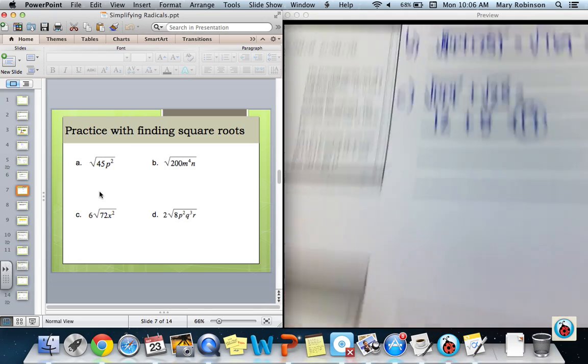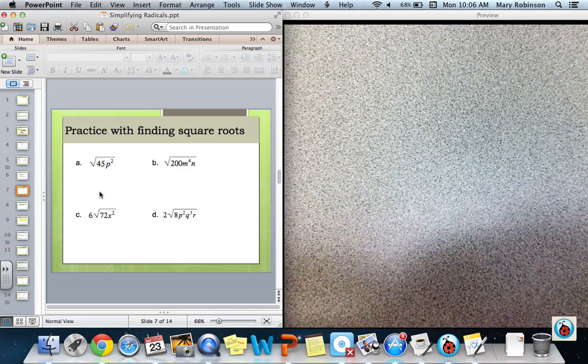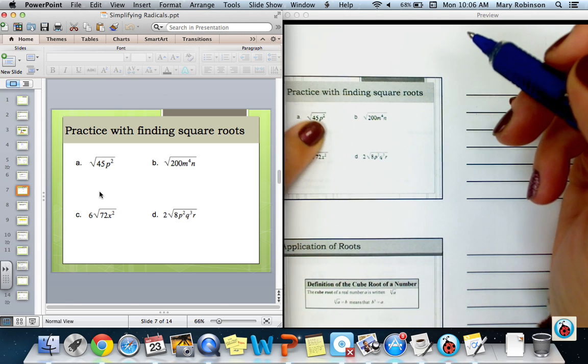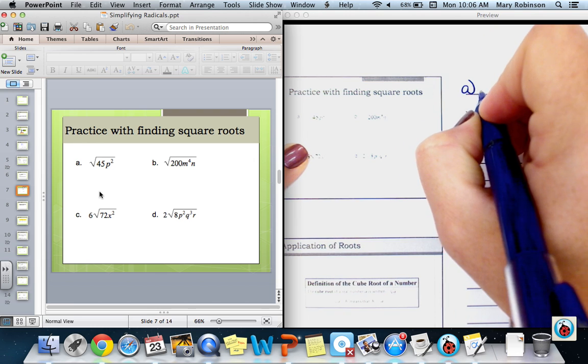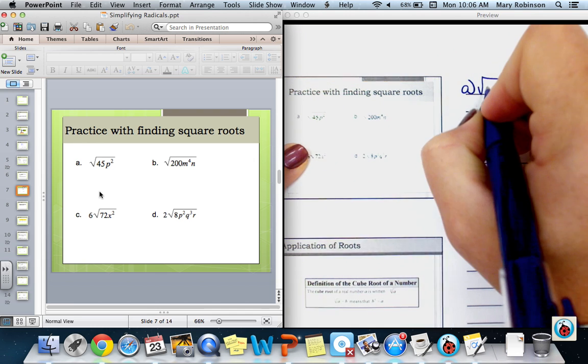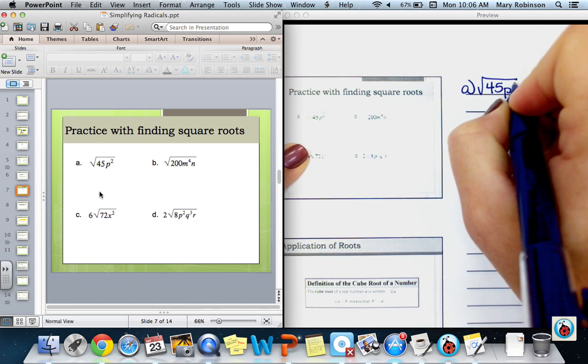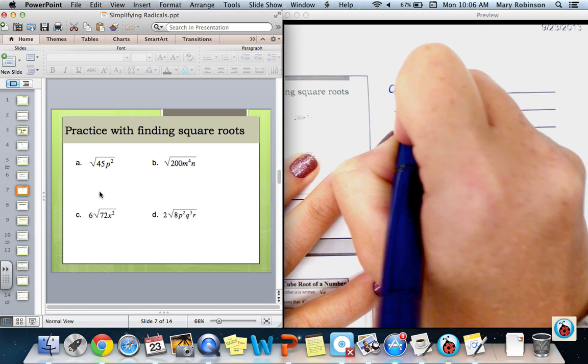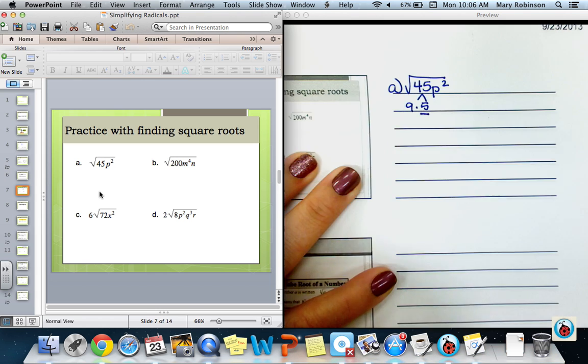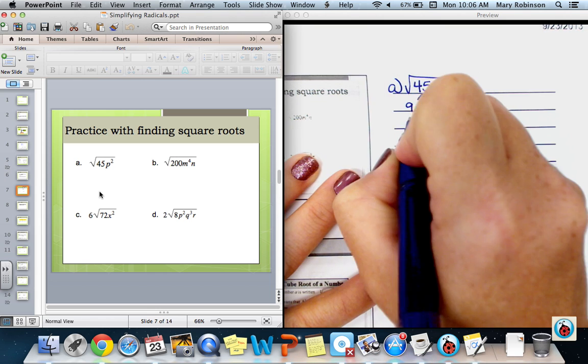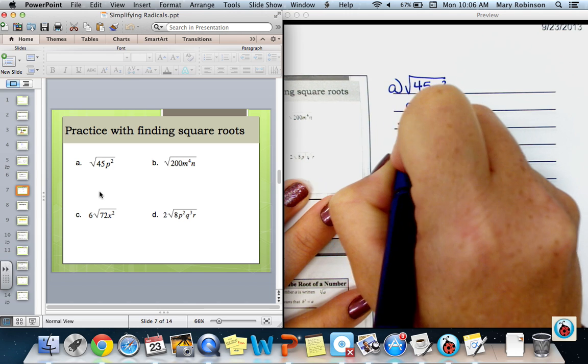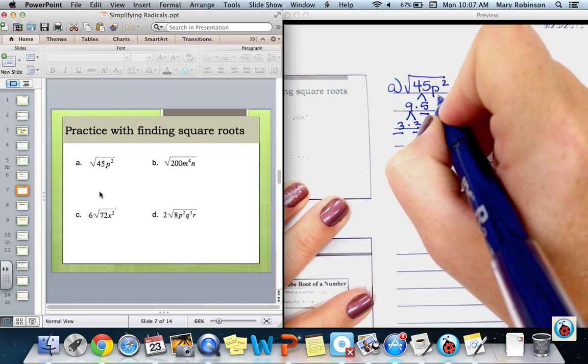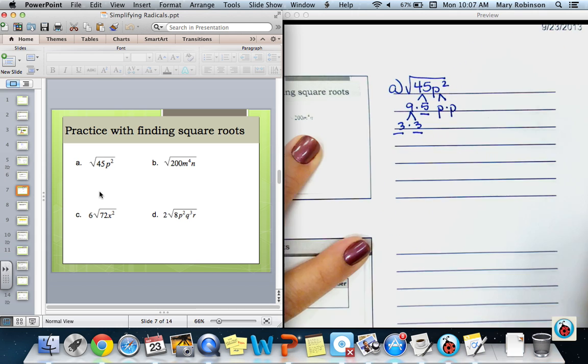On this next slide, part A asks us to find the square root of 45p squared. The rules with variables are the same with numbers. So the first thing we want to do is find the prime factorization of 45p squared. We can think of using a factor tree again. 45 breaks down to 9 and 5. I'm underlining 5 since that's my prime factor. And anything that can further be broken down, I continue to do so. So 3 times 3. Our variable here, p squared, can be broken down to p times p.